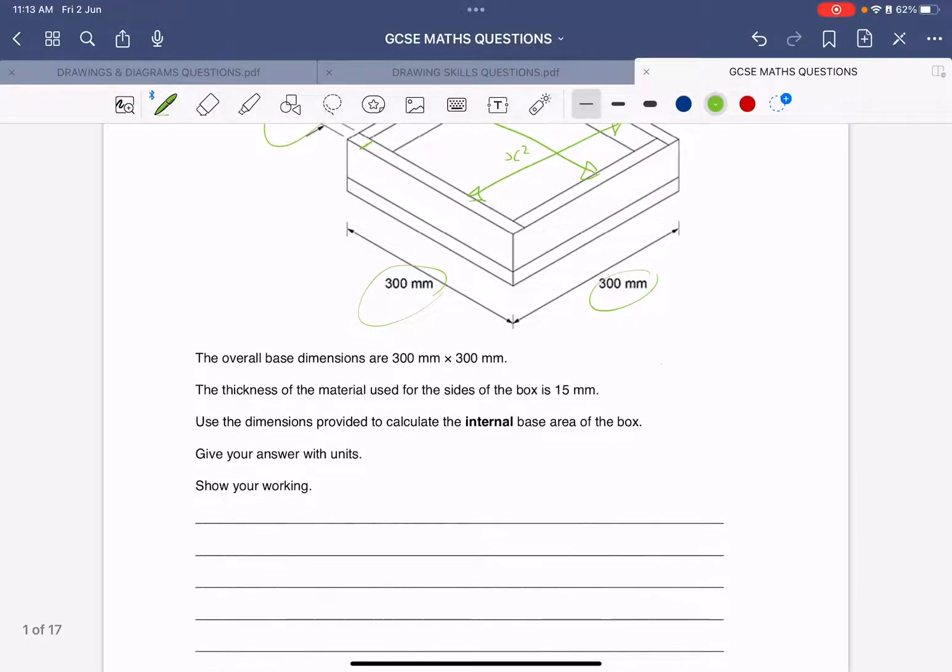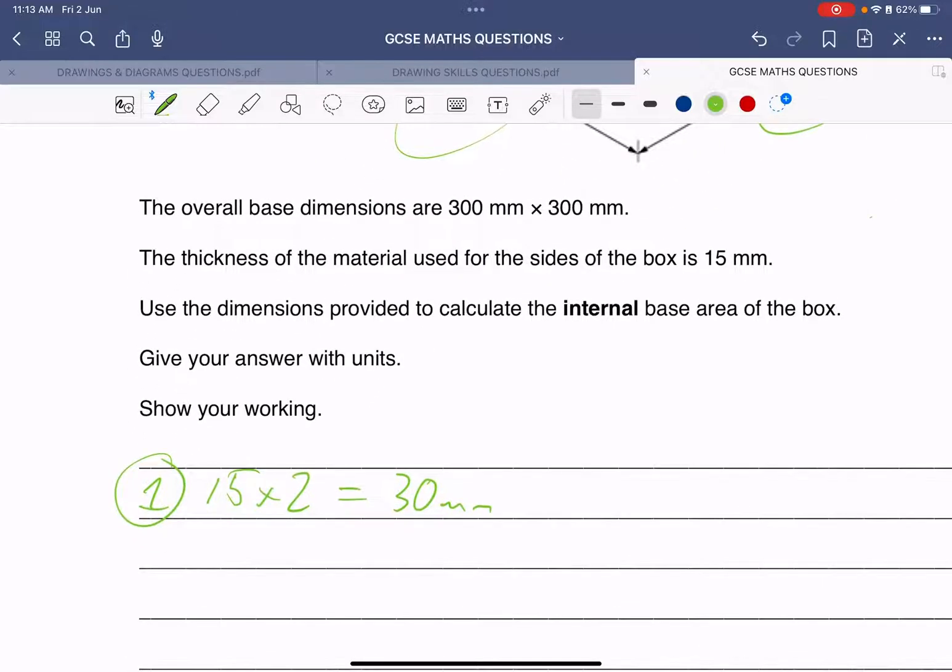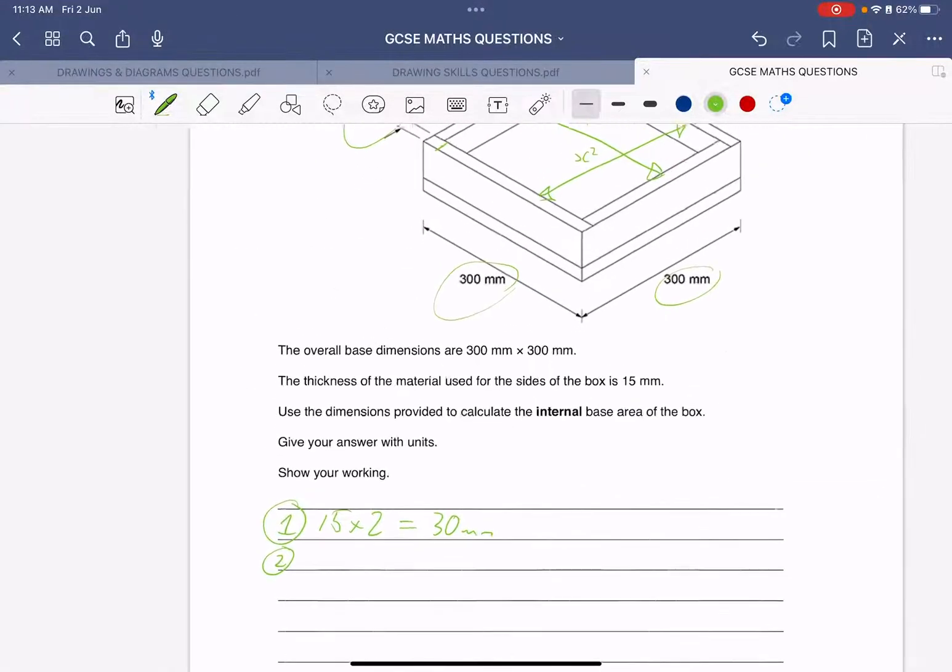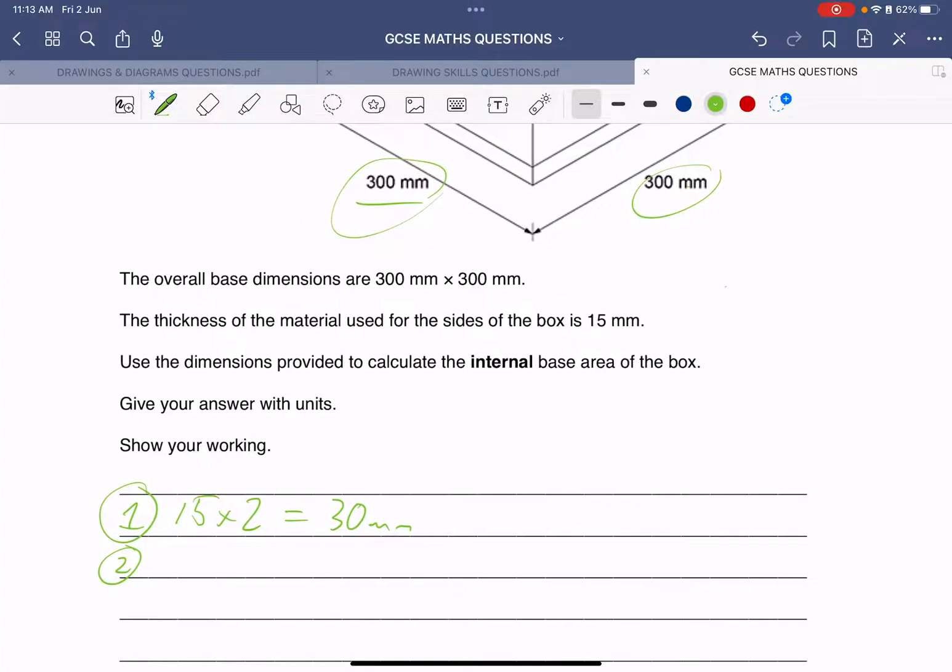So I'm going to do that down here. Step 1, I'm going to do 15 times 2, which equals 30. Now, the good news is that gets you a mark. Step 2, we now need to subtract that from 300.